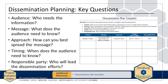As you plan your dissemination, there are several key questions to ask. The first involves the audience, or those who need the information you will disseminate — who are the right people to receive the information? The message involves determining what the audience needs to know, or what is the right information. The approach is the means you use to transmit the information to the audience — how can you best spread the message? Timing concerns when the audience needs to know the information, that is, what is the right time to share it?